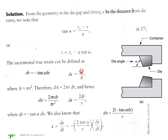You define strain as change in area upon area, so dε = dA/A. Because A = πr², dA = 2πr·dr, therefore dε simplifies to 2·dr/r. Now finally you define your strain rate as dε/dt.